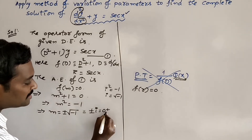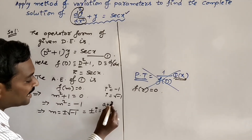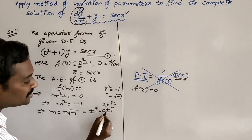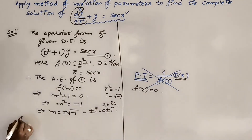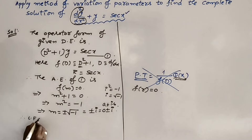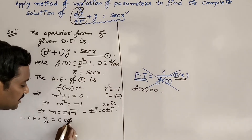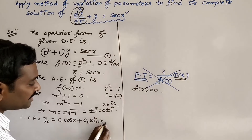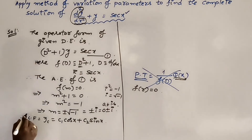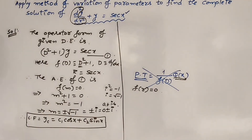So m = 0 ± i, which is in the form a ± ib. Here a is the real part = 0, and b is the imaginary part = 1. Therefore, the complementary function is yc = e^(0·x)(c1·cos(x) + c2·sin(x)) = c1·cos(x) + c2·sin(x). This is the complementary function for the given differential equation.